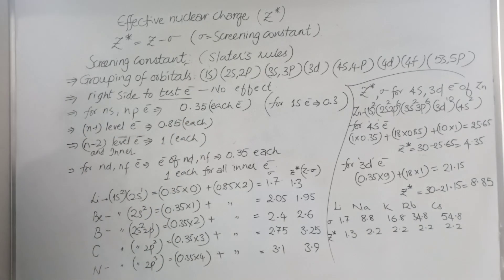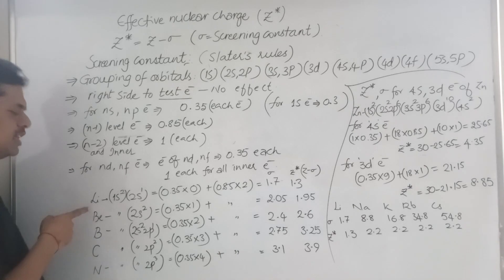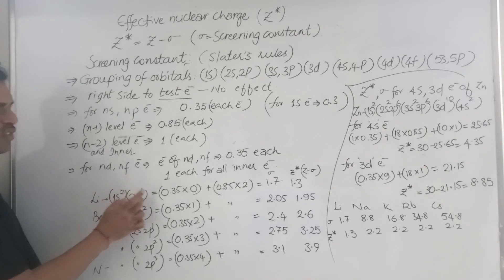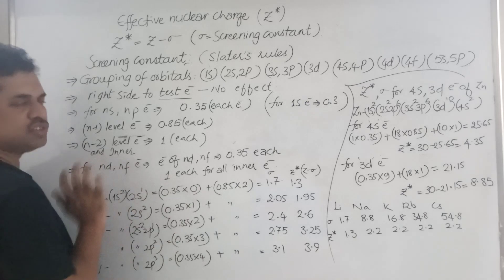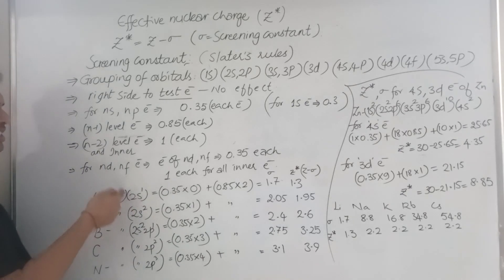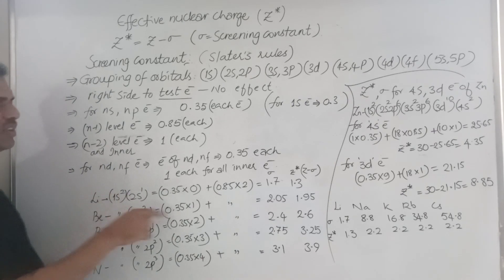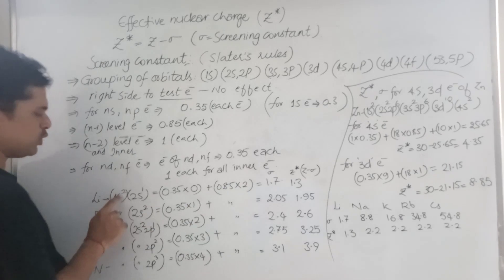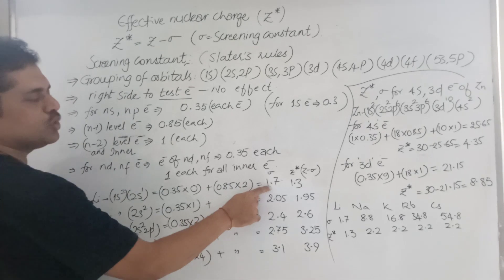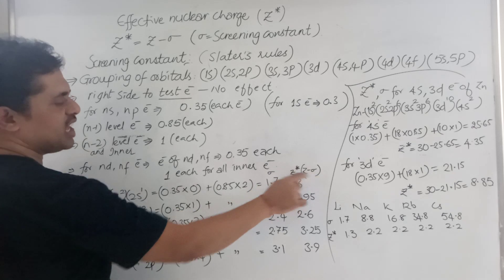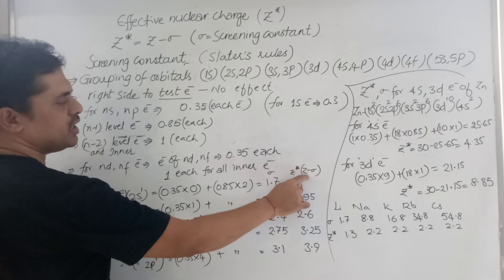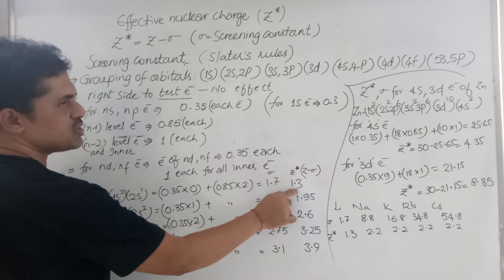For your understanding, let's take lithium with electronic configuration 1s² 2s¹. About the 2s¹ electron — this is the test electron. In the outermost shell, with the test electron gone, there are no other electrons, so 0 × 0.35. The 1s² level is n-1, so 2 × 0.85 = 1.7. Therefore sigma = 1.7, and Z star = Z − sigma = 3 − 1.7 = 1.3.